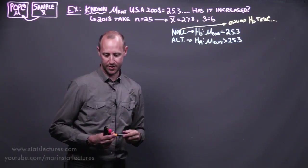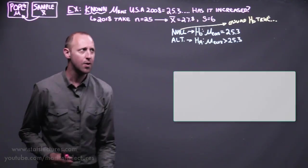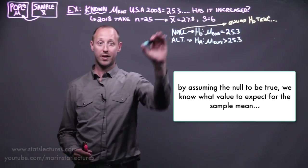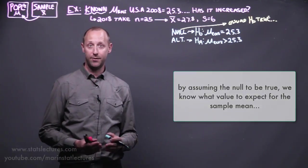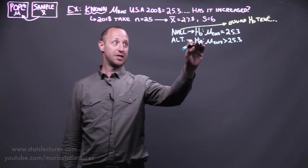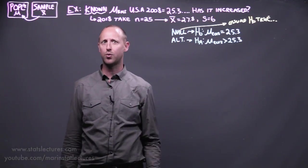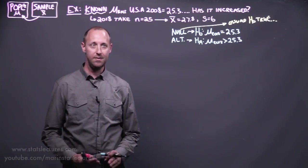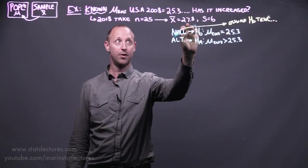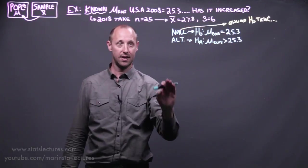Let's talk about why we do this. When assuming that the null is true, then we know what we expect to show up when we collect a sample of data. If the mean BMI hasn't changed from 2008 to 2018, we'd expect our sample mean to be about 25.3. And then we can compare what we saw in our sample with what we would expect to see if our null is true.